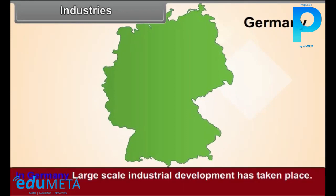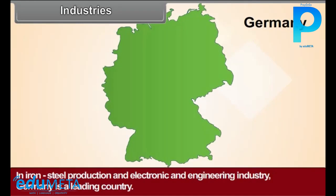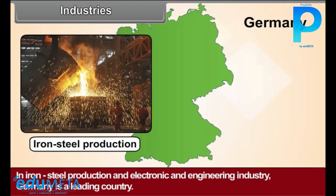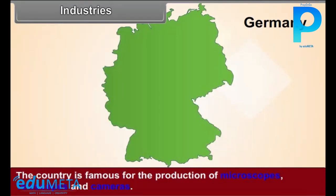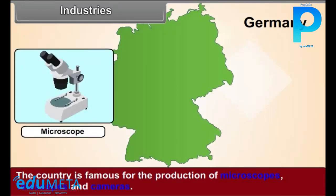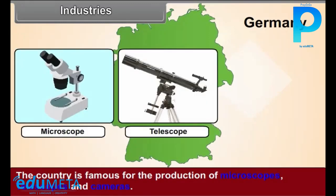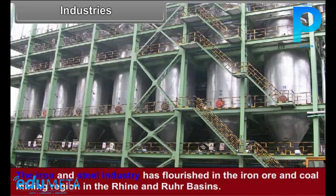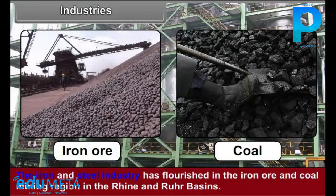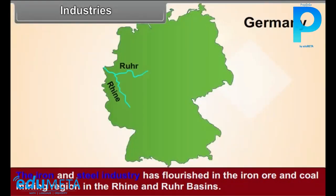Industries. In Germany, large-scale industrial development has taken place. In iron and steel production and the electronic and engineering industry, Germany is a leading country. The country is famous for the production of microscopes, telescopes, and cameras. The iron and steel industry has flourished in the iron ore and coal mining region in the Rhine and Ruhr basins.